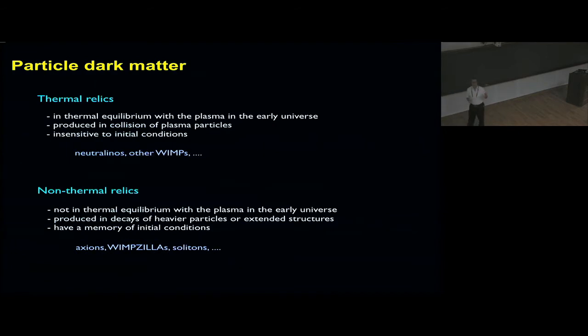Hot dark matter decouples kinetically when it's still relativistic, and big structures form first. Cold dark matter decouples kinetically when it's non-relativistic, and small structures form first and then merge. We see cold dark matter. Another distinction is between thermal relics and non-thermal relics. Thermal relics were in thermal equilibrium with the plasma in the early universe. They were produced in collisions of plasma particles, whereas non-thermal relics were not.